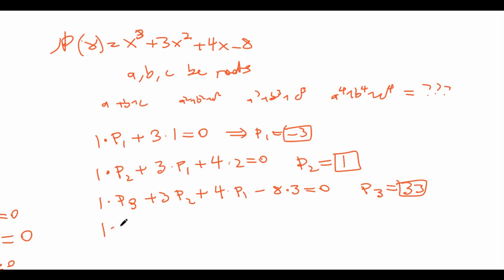And finally the last one: 1*P_4 plus 3*P_3 plus 4*P_2 minus 8*P_1. And remember, since we don't have any more coefficients after this, everything after that is just 0, so we just set this expression to 0. Now we know that P_1 is equal to negative 3, P_2 is equal to 1, P_3 is equal to 33. So what's P_4? I'll leave that as an exercise to the viewer.